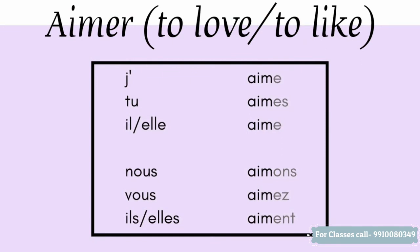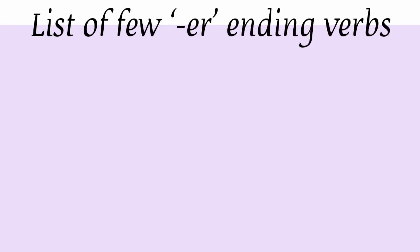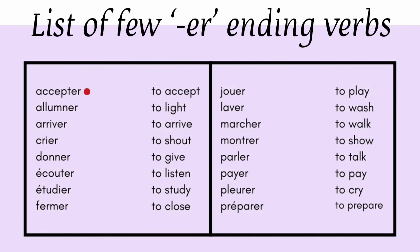So this was the ER ending verb — the method of conjugating and how to use it with various subjects. There are many more ER ending verbs which follow the same rule. For example: accepter (to accept), allumer (to light up), arriver (to arrive), crier (to shout), donner (to give), écouter (to listen), étudier (to study), fermer (to close), jouer (to play), laver (to wash), marcher (to walk), montrer (to show), payer (to pay), pleurer (to cry), and préparer (to prepare).